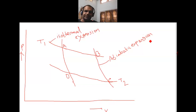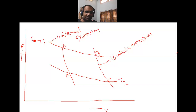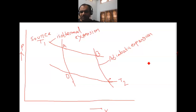Because of this adiabatic expansion, the gas does work. Therefore there is a decrease in temperature. When the gas expands in an adiabatic process, there is a decrease in temperature. So now we arrive at temperature T2.